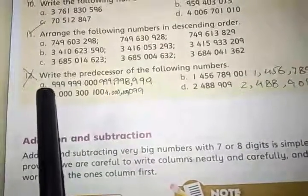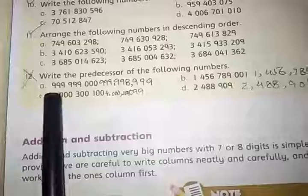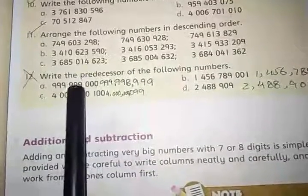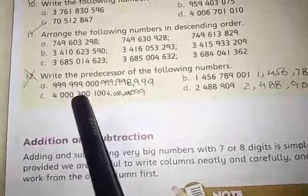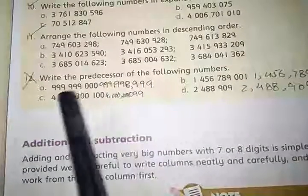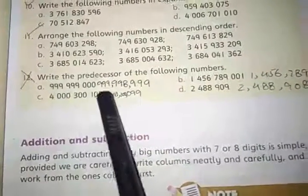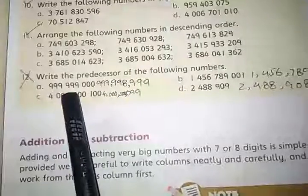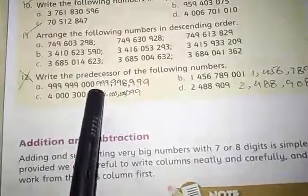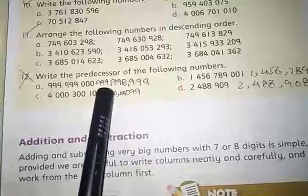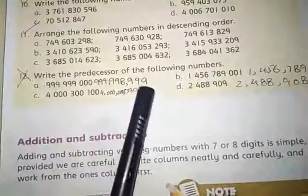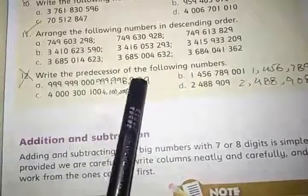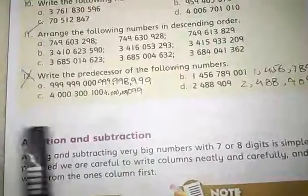For example, we have a number 999,999,999,000. Now we have to write its predecessor. The one number before this number is 999,999,998,999. This number is the predecessor of this given number.